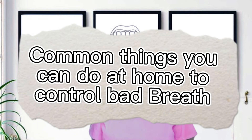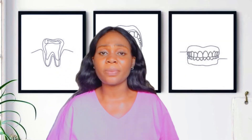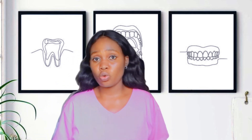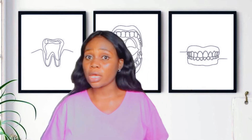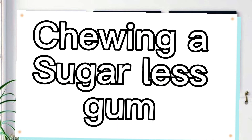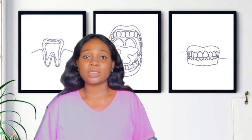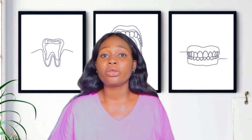Here are common things you can do at home to manage bad breath. Number one is drinking enough water — drinking enough water will help keep your mouth moist, especially when you have a dry mouth. Another tip is to visit your dentist every six months, which is the most important thing. You can also chew sugarless gum when you notice a dry mouth or offensive breath. And lastly, take yogurt — yogurt has probiotics, which help to neutralize harmful bacteria in your mouth.